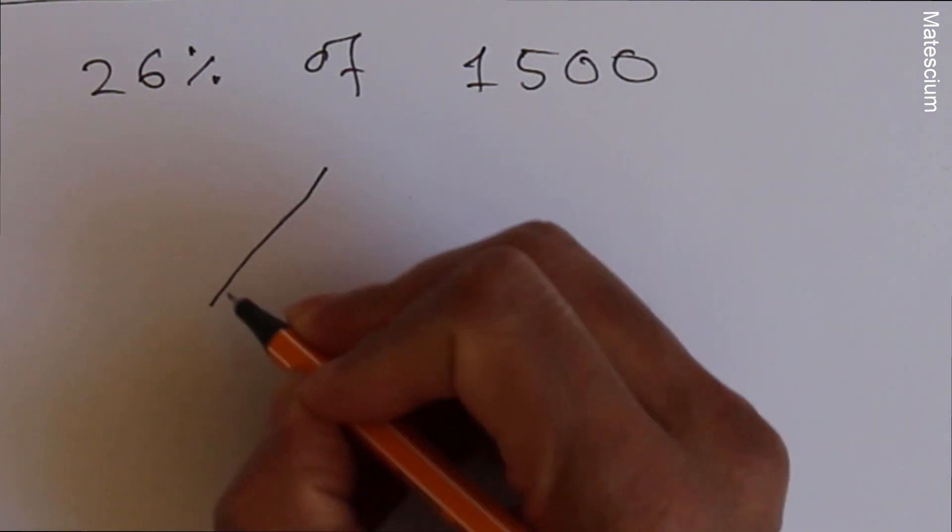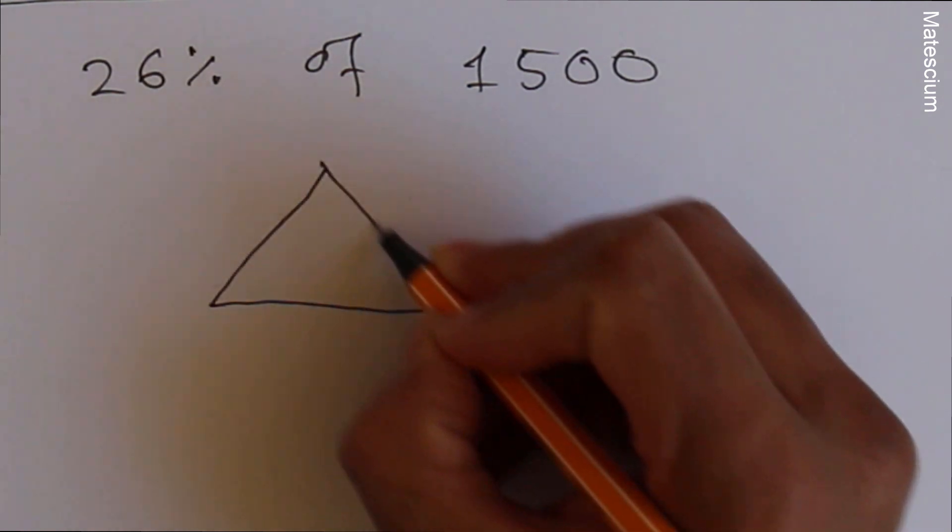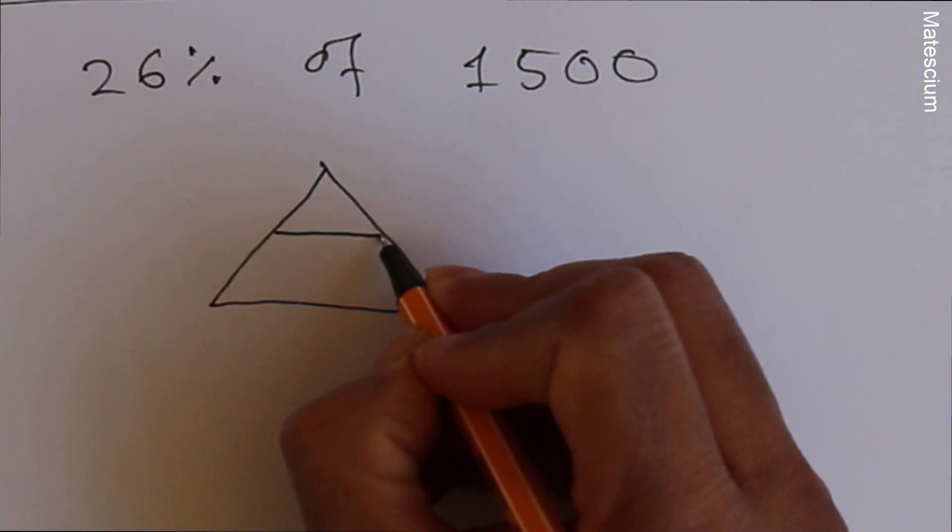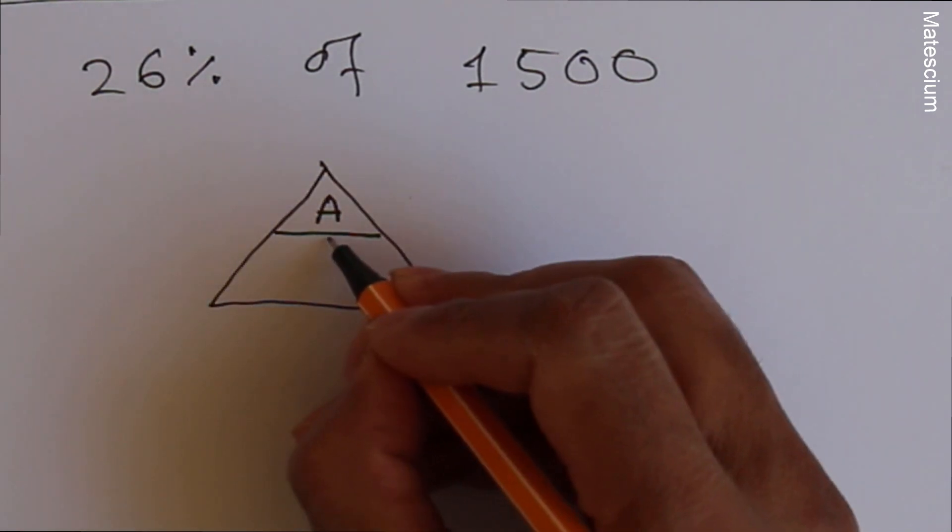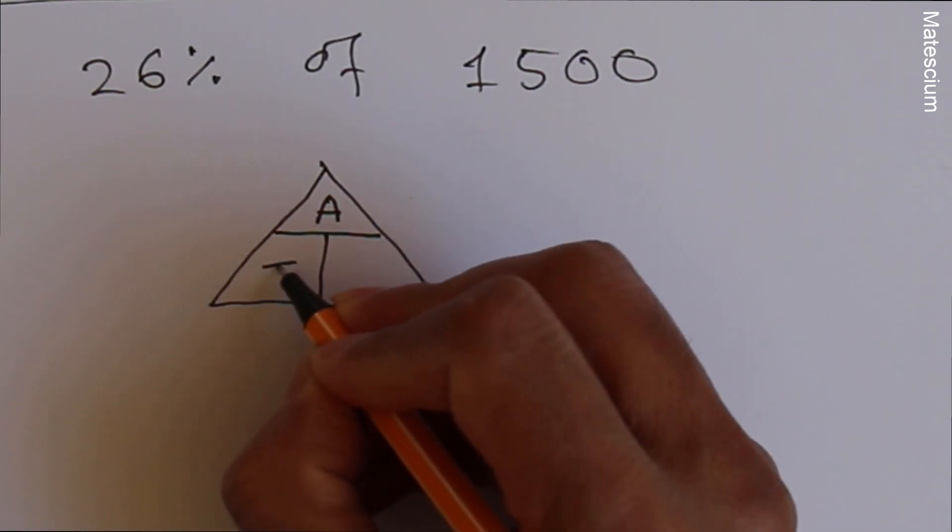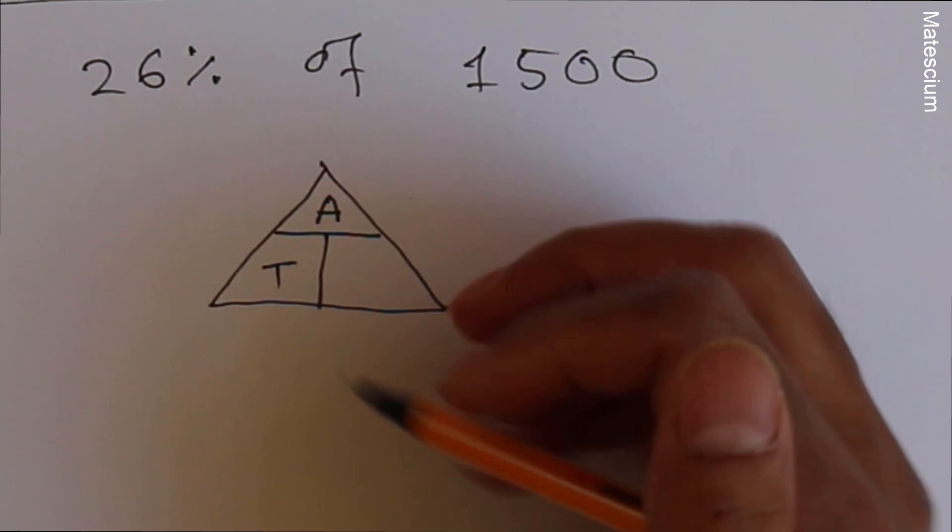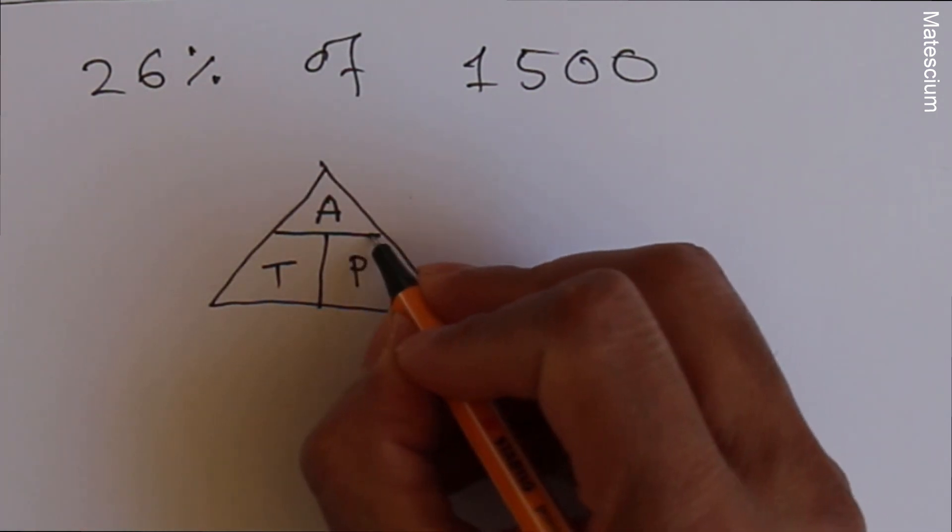That means draw a triangle here. And this is A. A means asking value that we have to find out. And T, T means total value. And P means percentage.